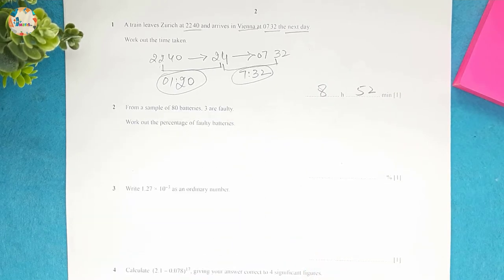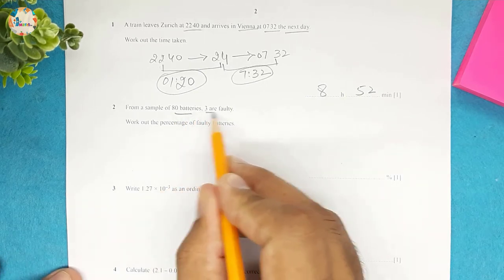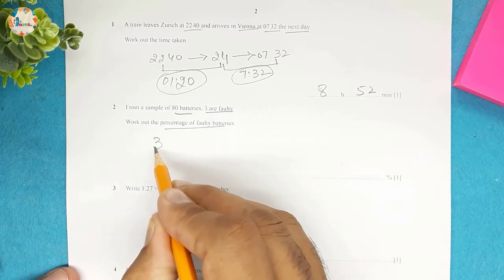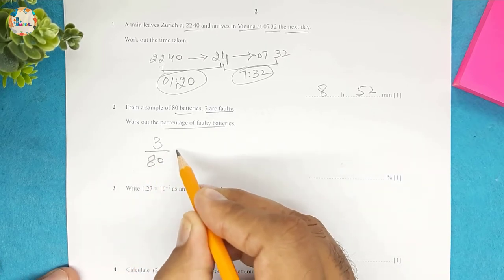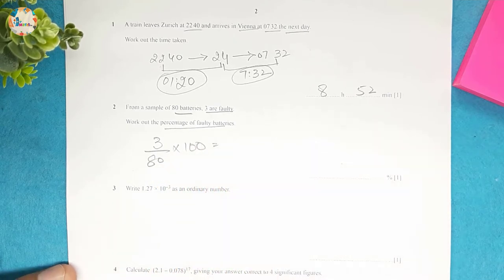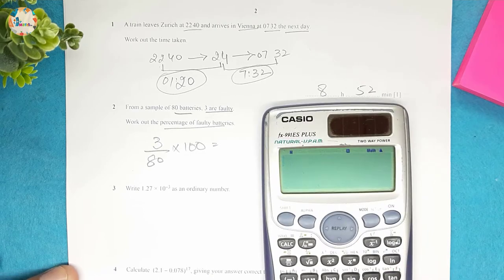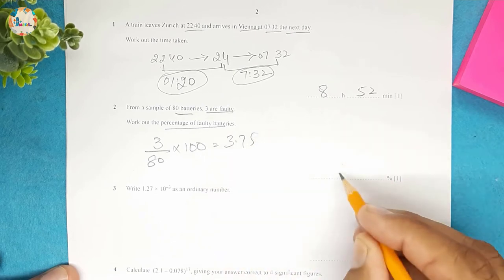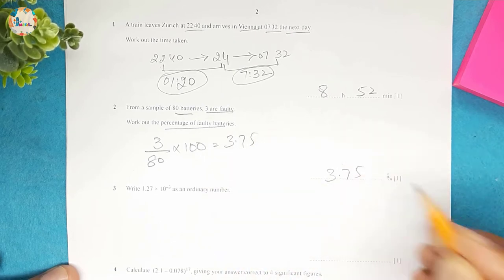Question 2. From a sample of 80 batteries, 3 are faulty. Work out the percentage of faulty batteries. So 3 out of 80 multiplied by 100. We calculate 3 × 100 ÷ 80 = 3.75. The answer is 3.75%.